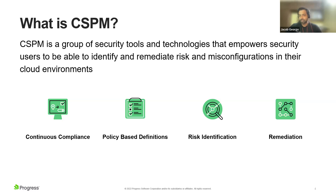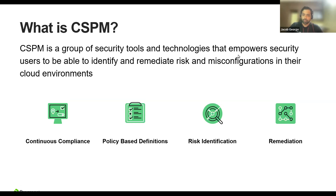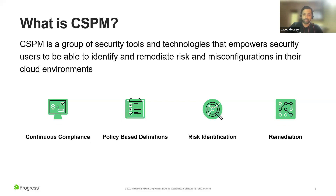Policy-based definitions relates to the same aspect — you need benchmarks against which you're actually going to be testing your cloud infrastructure. When you are running these audits on top of your cloud infrastructure, you can identify the risks, which is the third major aspect. You can understand where your security risks and configuration issues lie. Once you've identified them, the next step is fixing those issues — remediation is also a major aspect of CSPM. These four major aspects incorporate whatever technology you would see in the CSPM space.